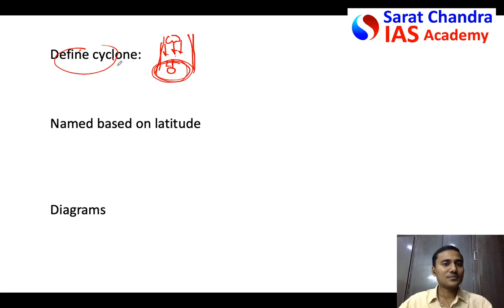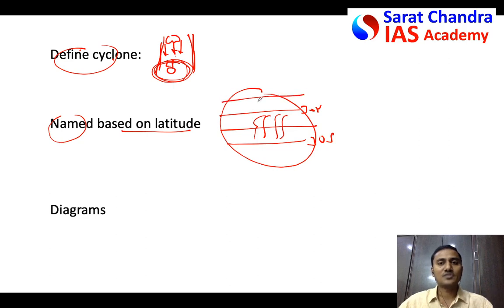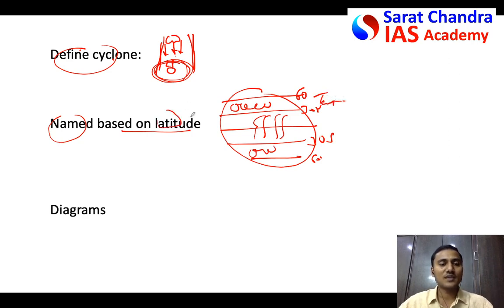Cyclones are named based on latitude. Cyclones formed between 30°N to 30°S around the tropical area are called tropical cyclones, and those formed between 30° and 60° either north or south are called temperate cyclones or extra-tropical cyclones.